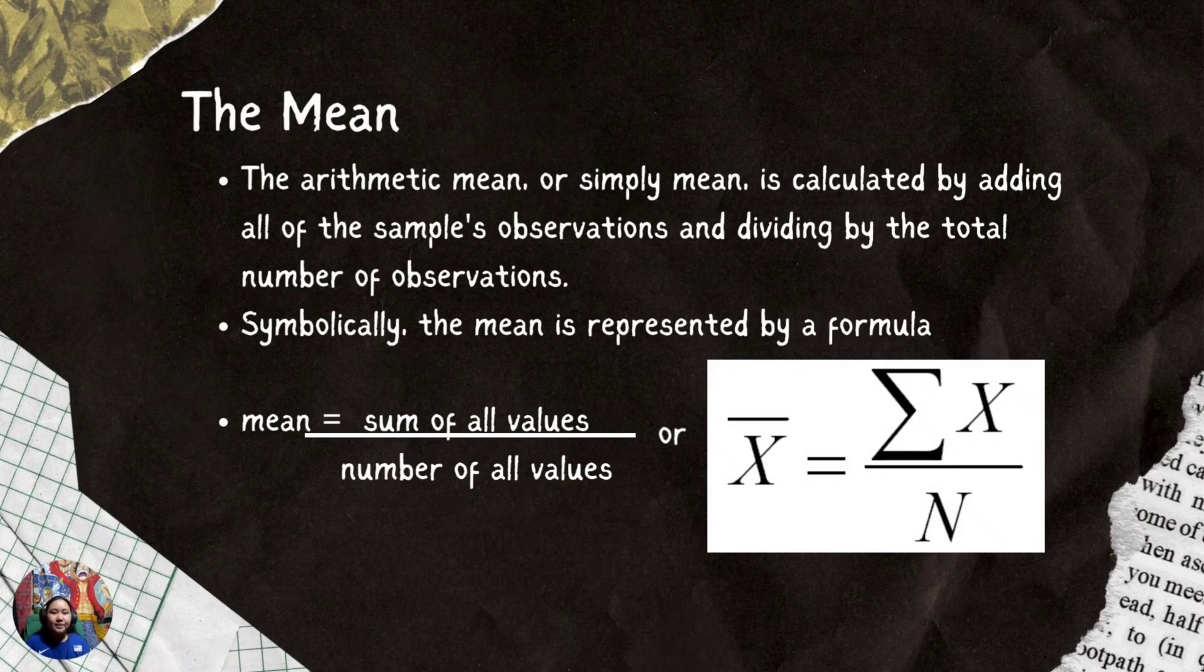An arithmetic mean, or simply mean, is calculated by adding all of the samples' observations and dividing by the total number of observations. Symbolically, the mean is represented by a formula: mean equals sum of all values over number of all values, or simply x̄ = ΣX/N.